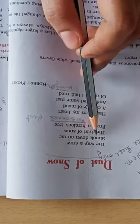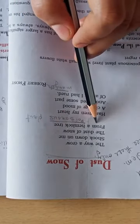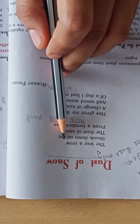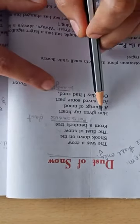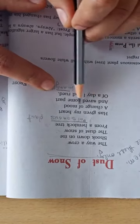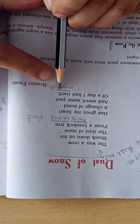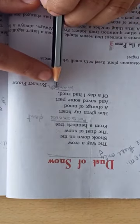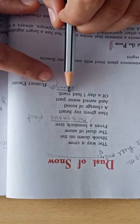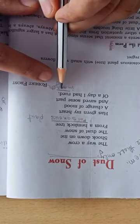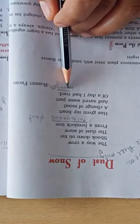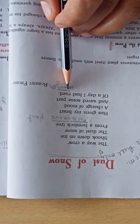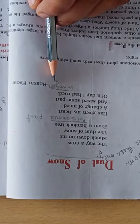The way a crow shook down on me the dust of snow from the hemlock tree. The way crow sat on the tree and shook the branches, those snow particles fell on me. Has given my heart a change of mood and saved some part of a day I had rued. I was the whole day very angry, but after this dust of snow I completely got changed in my mood. My anger was gone almost and now I was happy and joyfully passing my remaining part of the day.